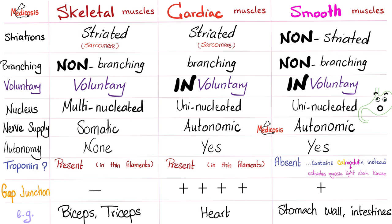Smooth muscles are non-striated, non-branching, involuntary, uninucleated, and autonomic — which means automatic, out of your control. Does it have autonomy? Yes. We have the interstitial cells of Cajal. Do we have troponin? No. Instead, we have the calcium-calmodulin system.